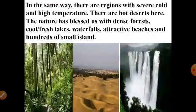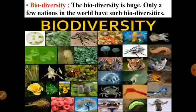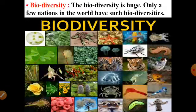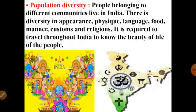This is the natural diversity in India. Biodiversity is huge in India — biodiversity means various types of animals and various types of plants. Only a few nations in the world have such biodiversity, and India is the first among them. Various types of wild animals and plants are there in India. And there is also population diversity: people belonging to different communities, different religions, different castes live in India.